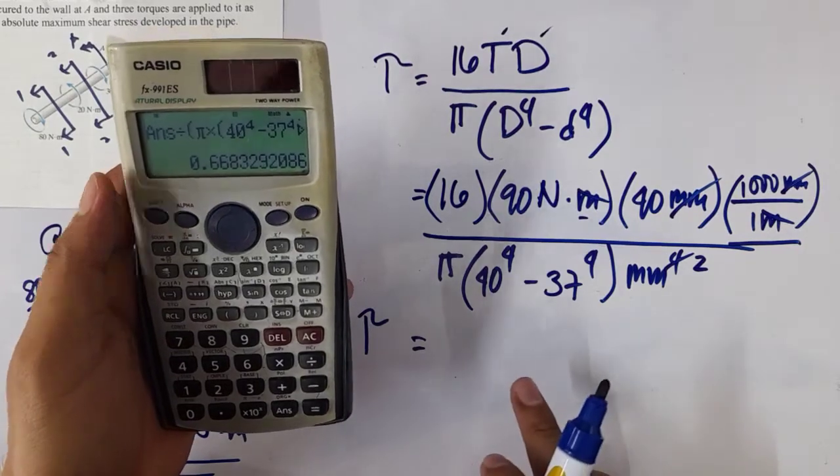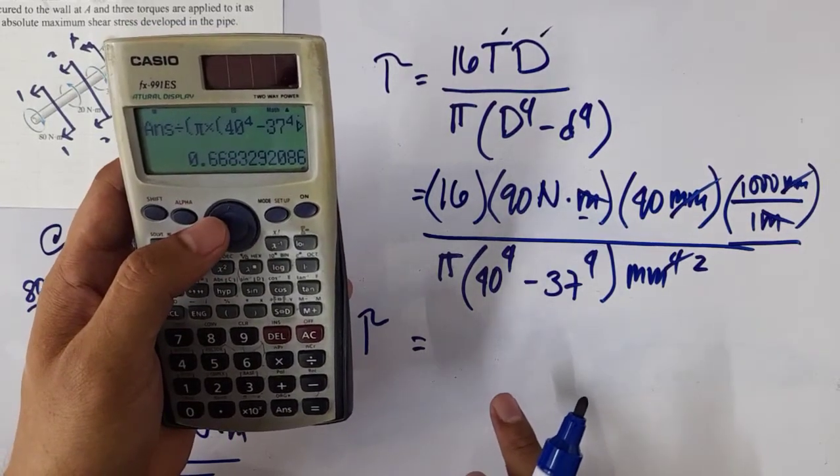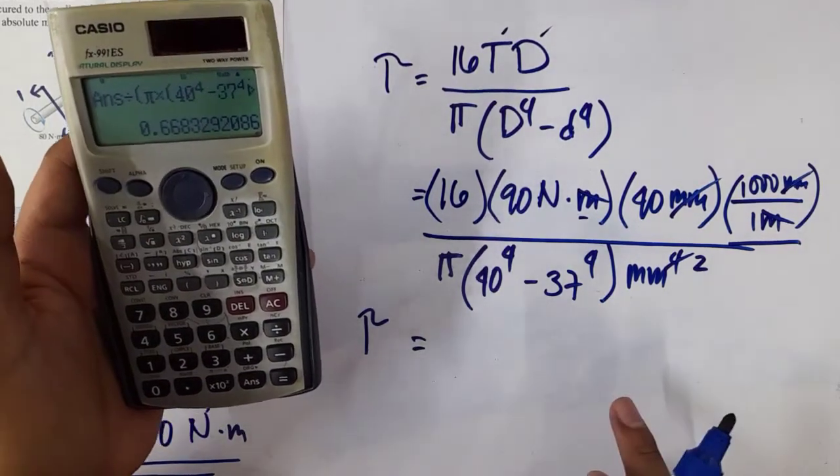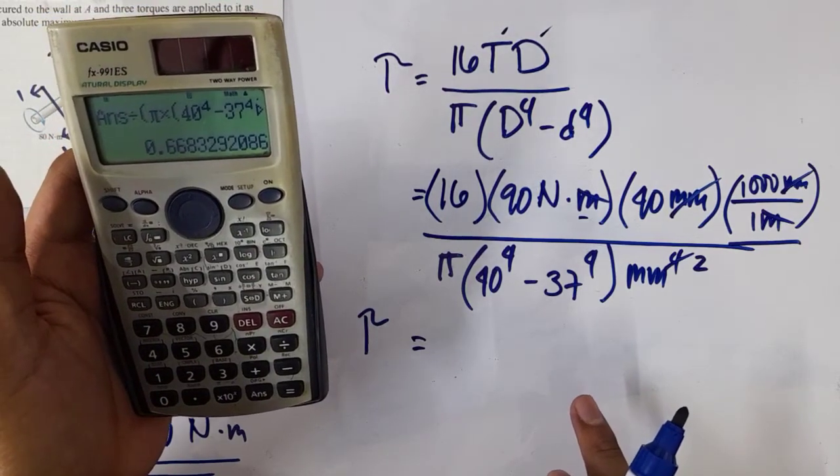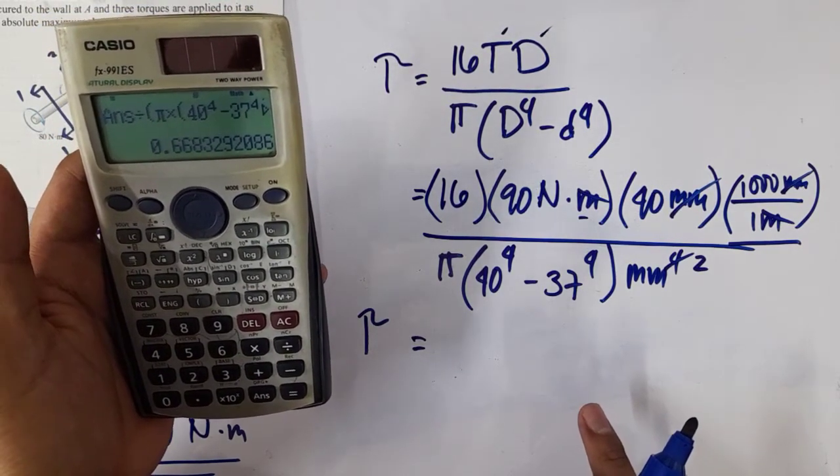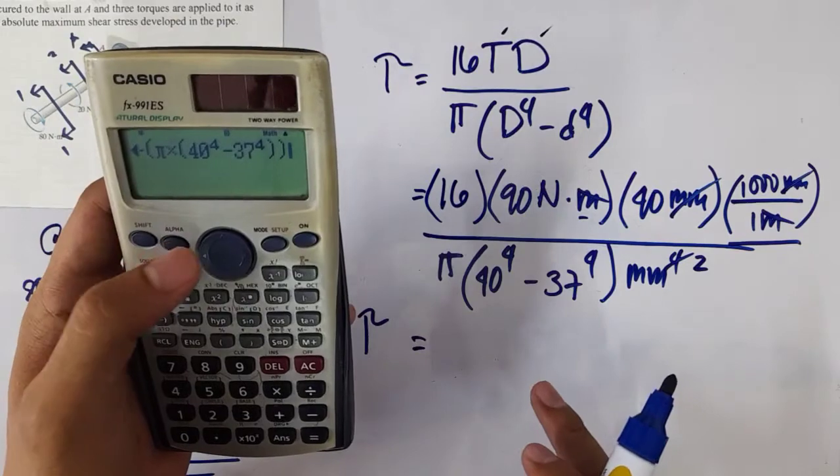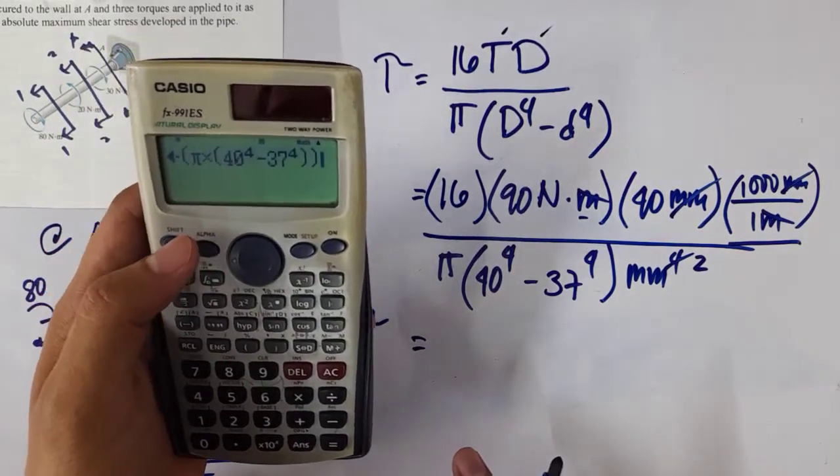Am I correct? So we have 37 raised to the 4, and then the shear stress is 66.83. We'll just review our answers. 40, 37.